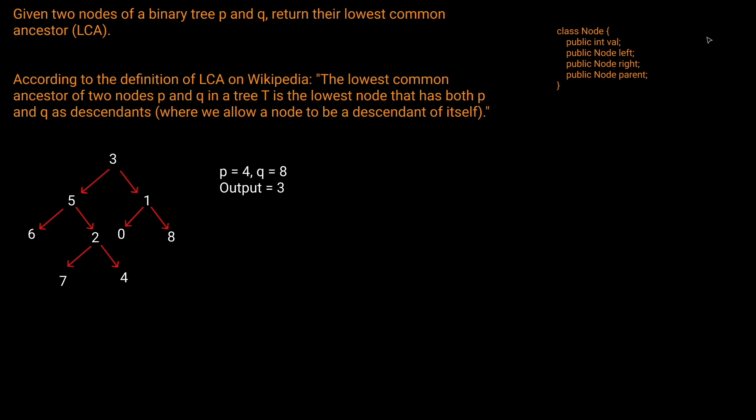Now let's look at an example. We've read the question prompt and understood what a lowest common ancestor in a binary tree is. Now let's look at our example and try to see how we might solve this problem. So if we're given that P equals four — this node here — and Q equals eight — this node here — what would be the lowest common ancestor?